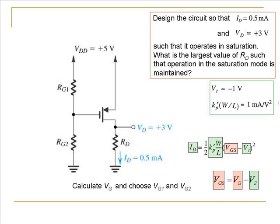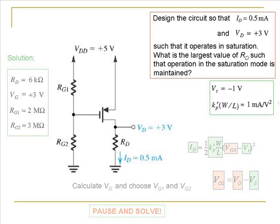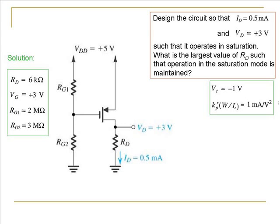RG1 and RG2 just act like a voltage divider circuit. You will not get a unique value for RG1 and RG2 — you will have to choose any value that satisfies a particular condition. The solution shown uses RG1 equal to 2MΩ and RG2 equal to 3MΩ. You can verify that as long as RG1 and RG2 are in the ratio 2:3, it does not matter what the exact values are.